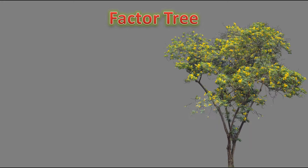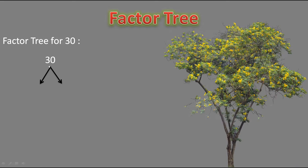Let's understand how to find the factor tree for 30. First, we write the number 30, then give it two branches. At the tip of these branches, we write numbers whose product gives 30. We have many options — 15 times 2, 10 times 3, or 5 times 6. I will use 10 times 3 here.